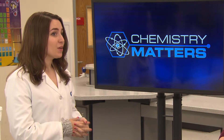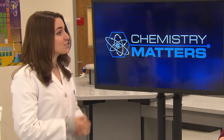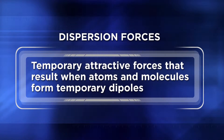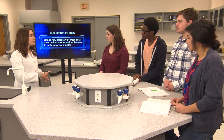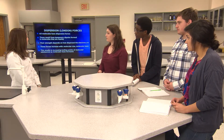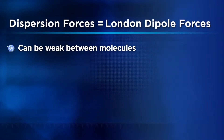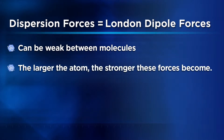Emily, you have dispersion forces - the first type of intermolecular force. Would you like to go ahead and present your findings to the group? Sure. I learned that all molecules and atoms have dispersion forces. Dispersion forces are attractive forces that result when atoms and molecules form temporary dipoles. A dipole simply means that a molecule has two poles, like a magnet. These forces are also called London Dipole forces, and they can be weak between molecules, but the larger the molecule or atom, the stronger these intermolecular forces become.